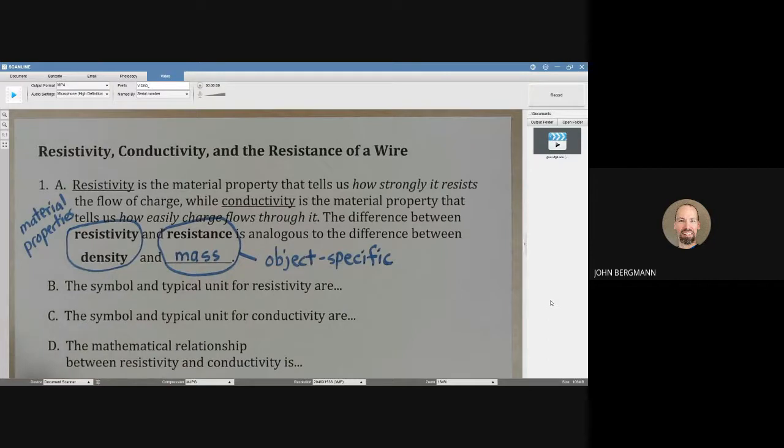Resistivity and density and conductivity are material specific, and things like resistance and mass are object specific.